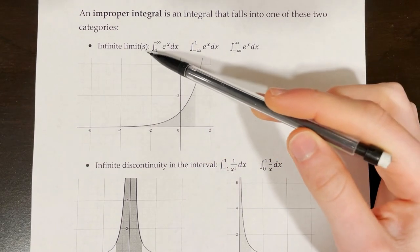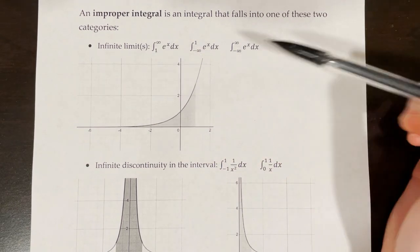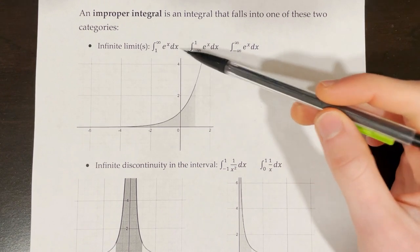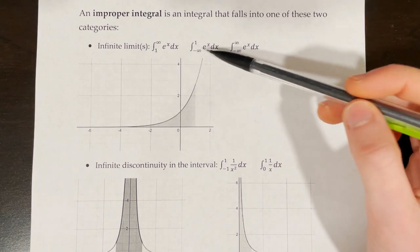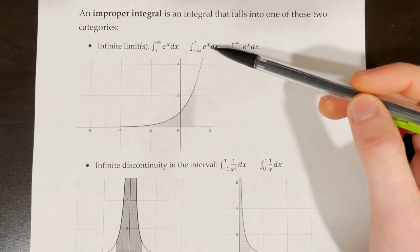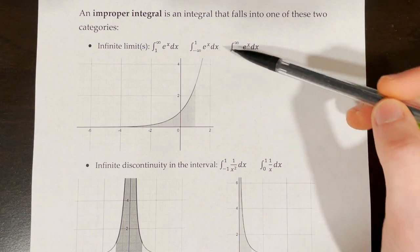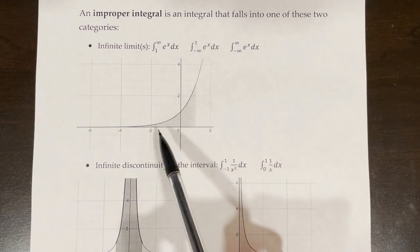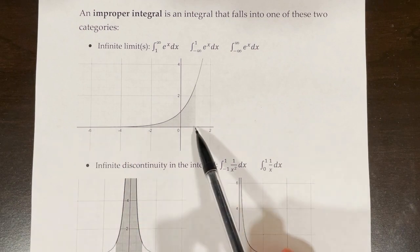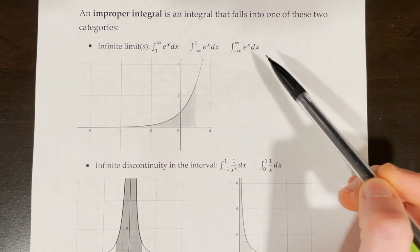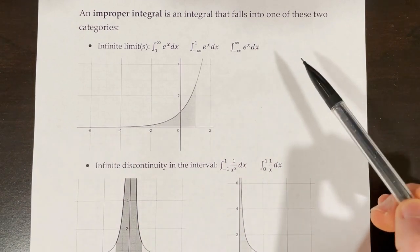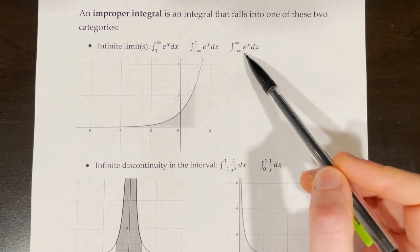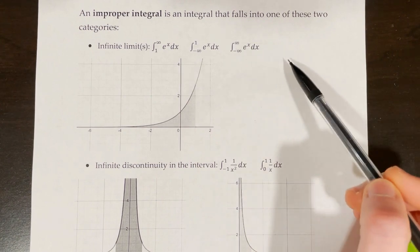For the infinite limit or infinite limits category, that could look something like this: the integral from 1 to infinity of e to the x dx, or the integral from negative infinity to 1 of e to the x dx, where our lower bound is negative infinity and our upper bound is x equals 1. Or maybe we would have a situation where both of the limits are infinite, like the integral from negative infinity to infinity of e to the x dx.